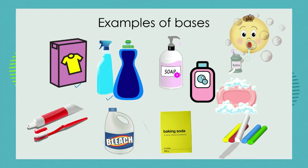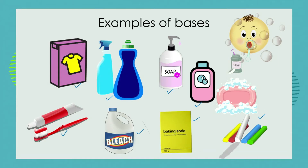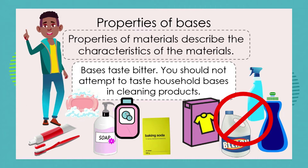We looked at things like washing powder, cleaning products, bleach, toothpaste, baking soda or bicarbonate of soda, various different soaps and shampoos, as well as chalk — something in our everyday lives that you don't think of as a basic chemical substance. When we look at properties of materials, we're describing characteristics that affect how they behave when combined with other chemicals.